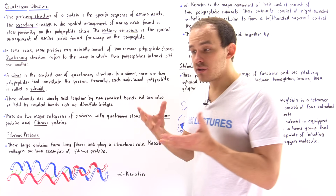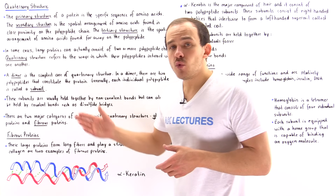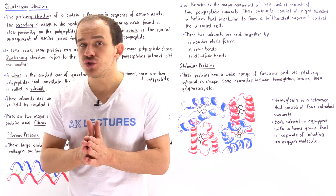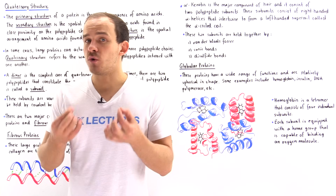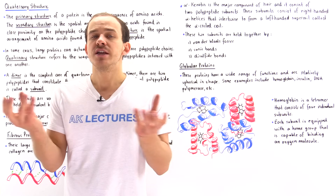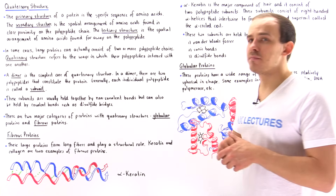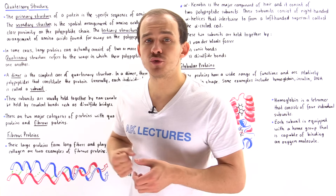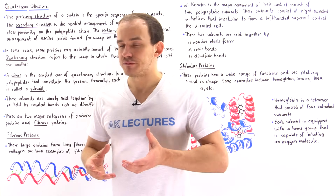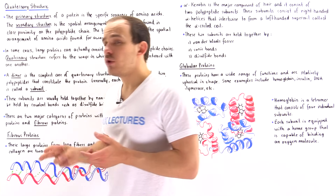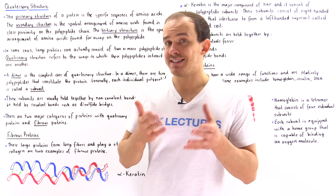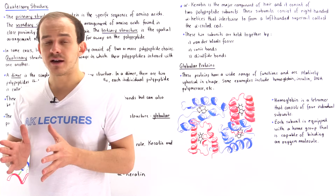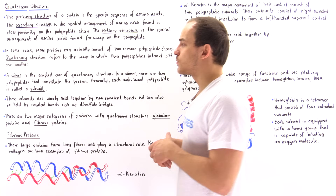The simplest type of quaternary structure is a dimer, where we have two individual polypeptide chains that interact usually via non-covalent bonds, but sometimes via covalent bonds such as disulfide bridges. Generally speaking, whenever we have quaternary structure those individual polypeptide chains are also known as subunits. So in a dimer we have two subunits, in a trimer three subunits, in a tetramer four subunits, and so forth. These subunits can be different or identical depending on the type of protein.